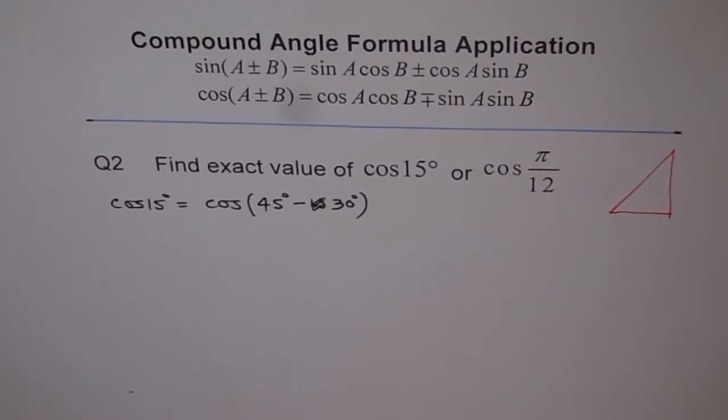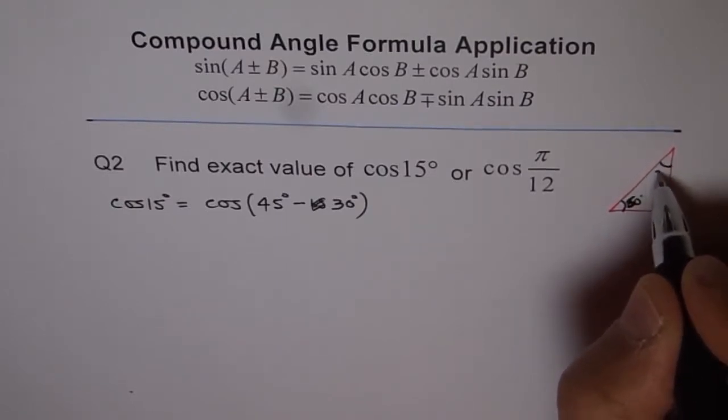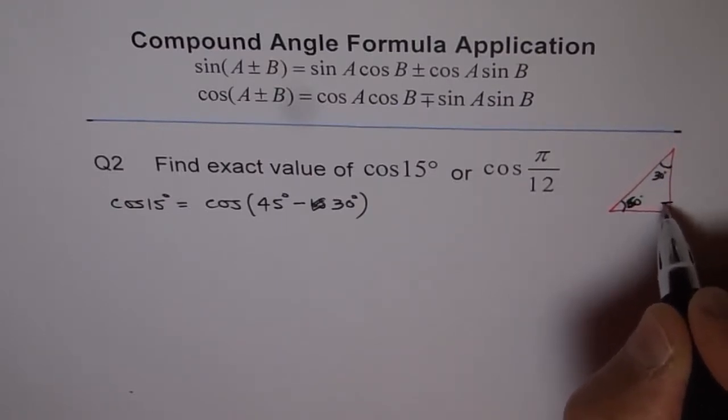So this is my 60 degrees, 30 degrees, 90 degrees, 60 degrees, 60 degrees and that is my 30 degrees and this is my 90 degree triangle.